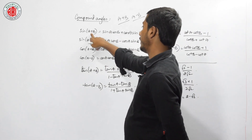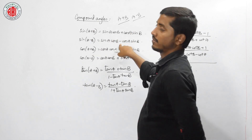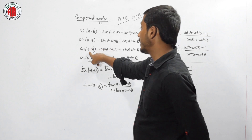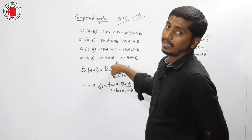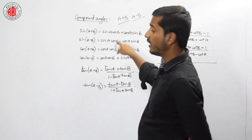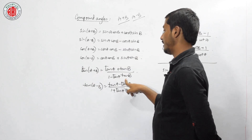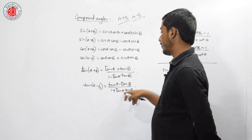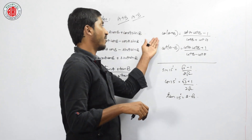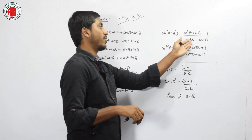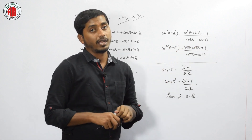This is completely reverse from sin. In sin, if it is plus we have plus; if it is minus we have minus. Whereas in cos, if it is plus it gives minus, and if it is minus it gives plus. Tan(a + b) = (tan a + tan b) / (1 − tan a tan b); tan(a − b) = (tan a − tan b) / (1 + tan a tan b). Cot(a + b) = (cot a cot b − 1) / (cot b + cot a); cot(a − b) = (cot a cot b + 1) / (cot b − cot a).